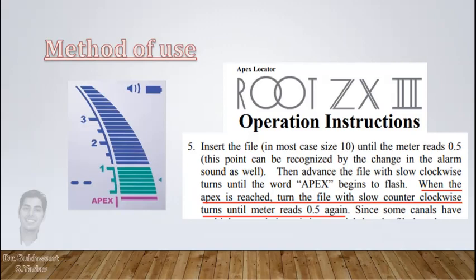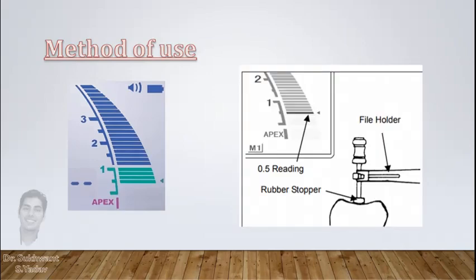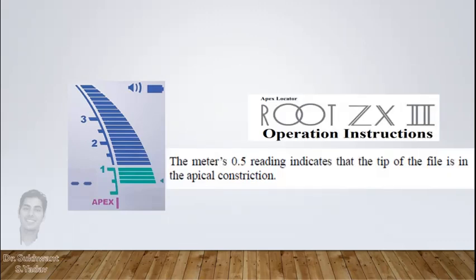According to them, take the file till the point where the red portion starts and then gently come back to the green zone up to the 0.5mm mark. Now this is claimed as apical constriction but errors can be there. So 0.5mm is reduced from this and that will be your final working length. Coming to literature research, first check this 0.5mm mark.